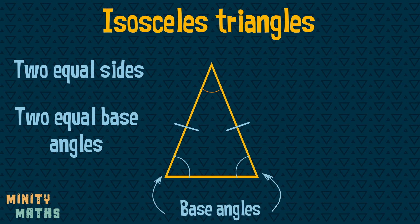The remaining angle is called the apex angle. Isosceles triangles also have one line of symmetry.